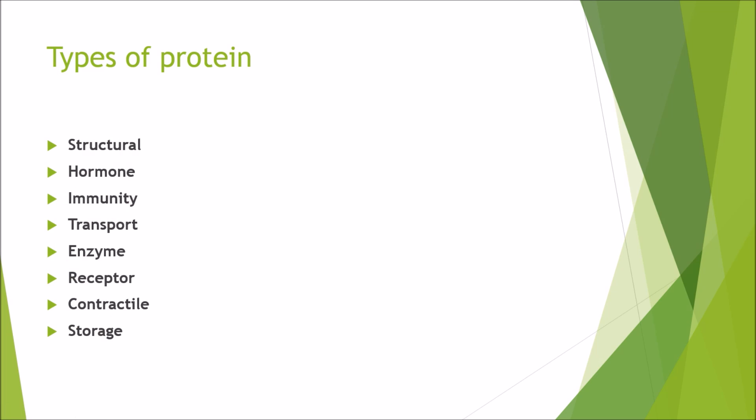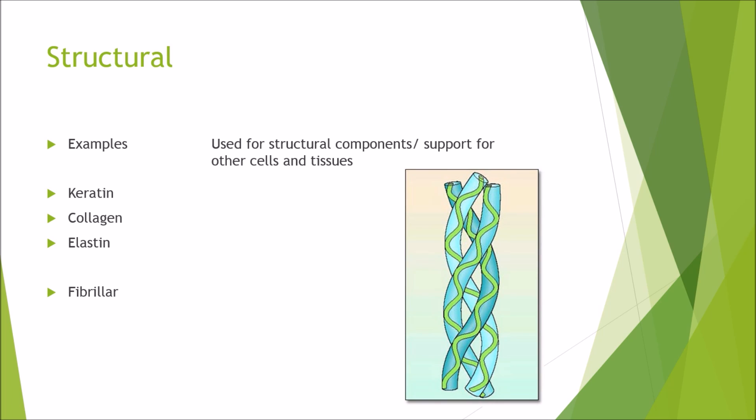Moving on, you can get different types of proteins. You can get structural, hormone, immunity, transport, enzyme, receptor, contractile and storage proteins. So to begin with structural protein.